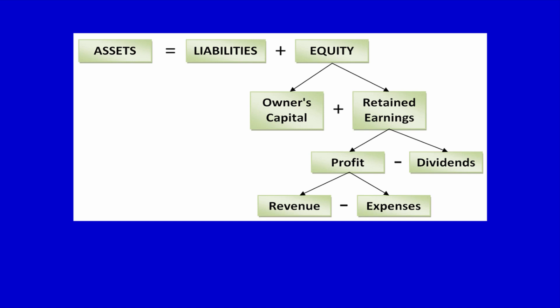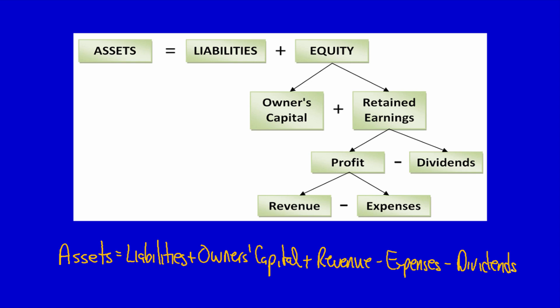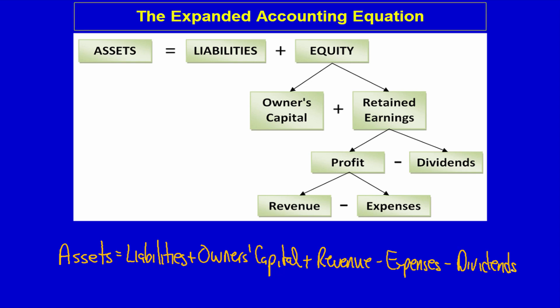We can also show the interconnection by using one mathematical equation: Assets are equal to liabilities plus owner's capital plus revenue minus expenses minus dividends. Both the flowchart and the mathematical equation represent what's called the expanded accounting equation. You can use either the equation or the flowchart — what is key is your understanding of the interconnection between the five financial reporting elements. We will eventually use this concept to build the financial statements.